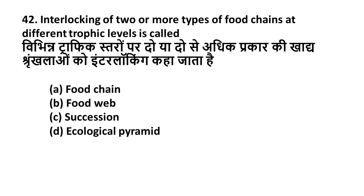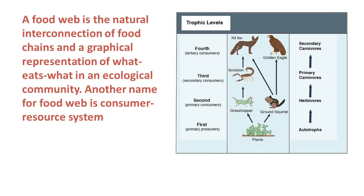Question 42: Interlocking of two or more types of food chains at different trophic levels is called — Option A: Food chain, Option B: Food web, Option C: Succession, Option D: Ecological pyramid. The right answer is Option B — food web. A food web is the natural interconnection of food chains and a graphical representation of what eats what in an ecological community. It is also known as the consumer-resource system. It includes autotrophs, herbivores, primary carnivores, and secondary carnivores.